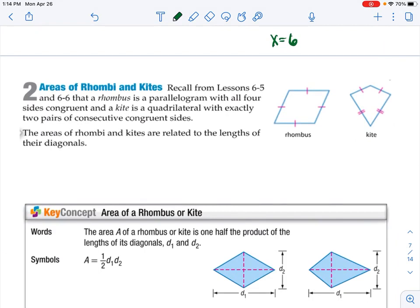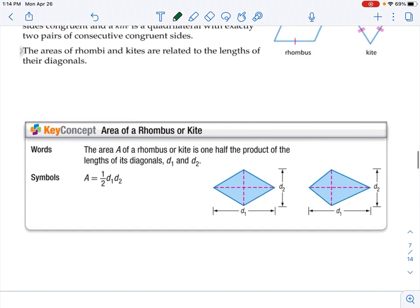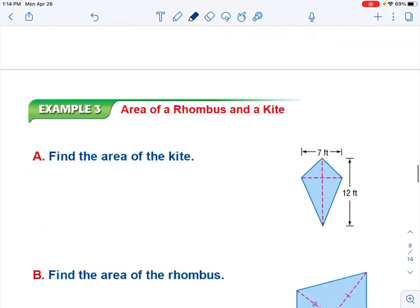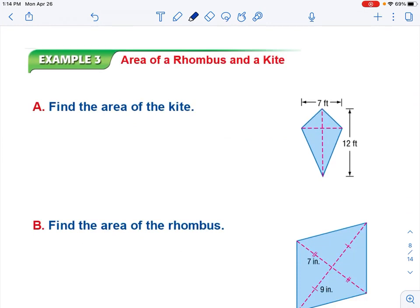Now, that is trapezoids. We are going to move on to rhombi and kites area of these shapes. Recall in 6-5 and 6-6 that a rhombus is a parallelogram with all four sides congruent, and a kite is a quadrilateral with exactly two pairs of consecutive congruent sides. The areas of rhombi and kites are related to the length of their diagonals. Your equation here is area equals half times diagonal 1 times diagonal 2. For area, you actually only really need to know the diagonals of your kite or rhombus.